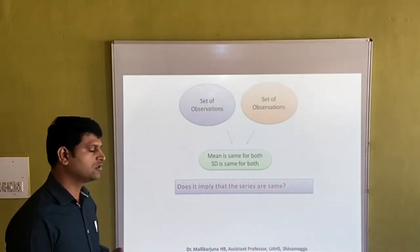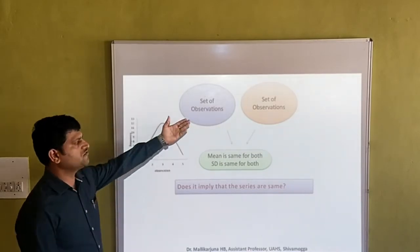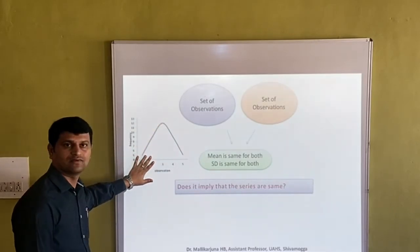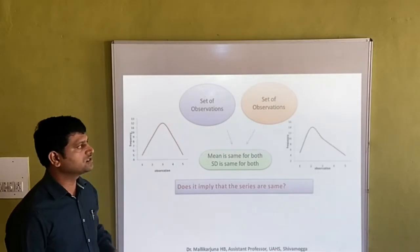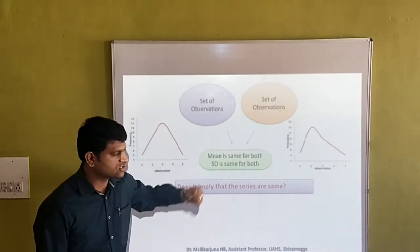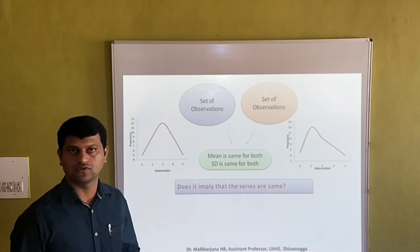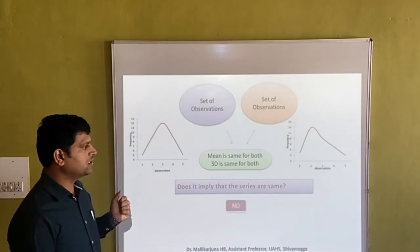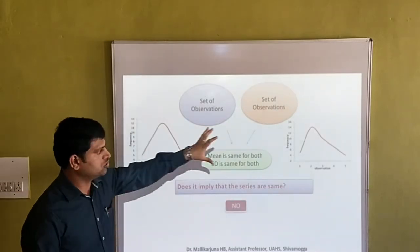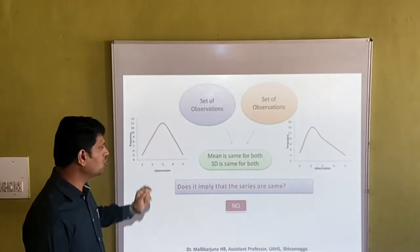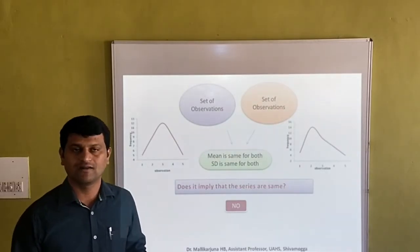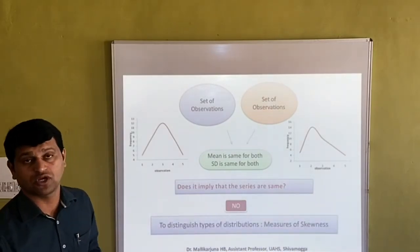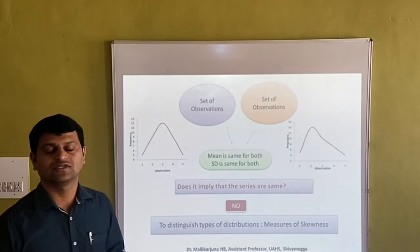If for one set of observations the distribution of data follows one curve shape, and for the second set of observations the distribution follows a different curve shape — even though the mean and standard deviation are both the same, the distributions look different. In this situation, to distinguish the types of distribution, we use measures of skewness.